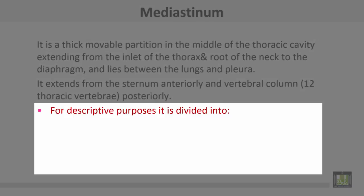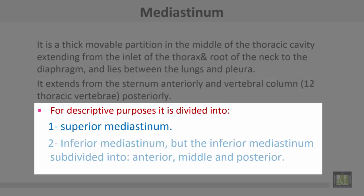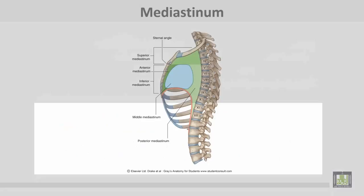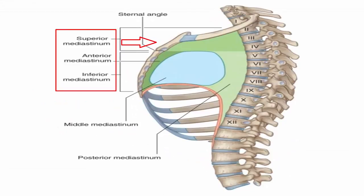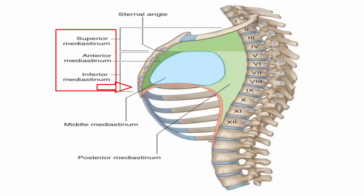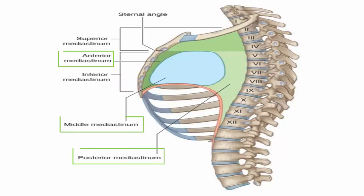For descriptive purposes, the mediastinum is divided into the superior mediastinum and the inferior mediastinum. The inferior mediastinum is subdivided again into anterior, middle, and posterior. An imaginary plane divides the mediastinum into superior and inferior portions. When we place the heart and pericardium inside the inferior mediastinum, it is subdivided into anterior, middle, and posterior.